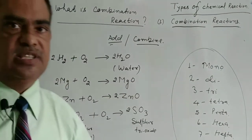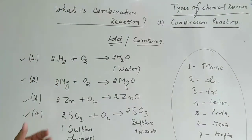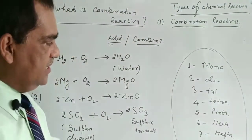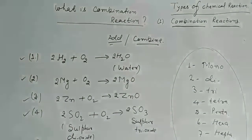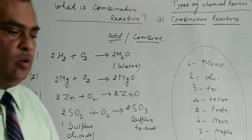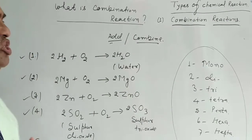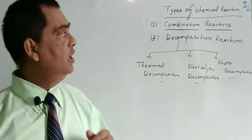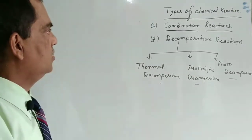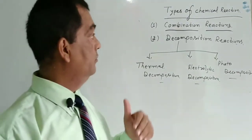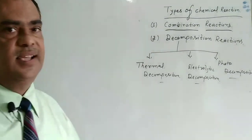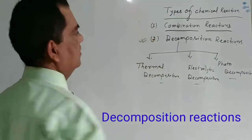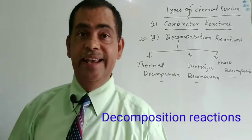You have now understood the first type of chemical reaction, which is the combination reaction. Next we will study the second type — just its opposite — which is the decomposition reaction.